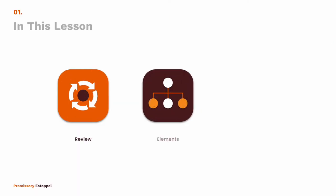In this lesson, we're going to consider three different things: we're going to look back and do a little bit of review, look at the elements of promissory estoppel, and then look at some examples — really one primary example — to see how it works in practice.